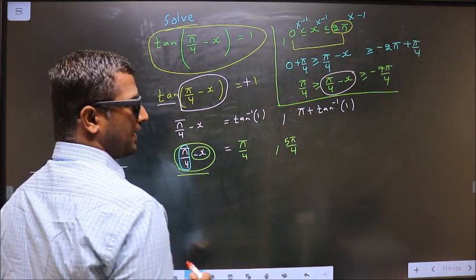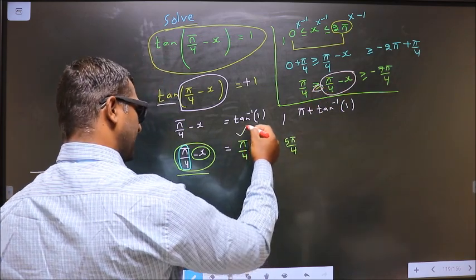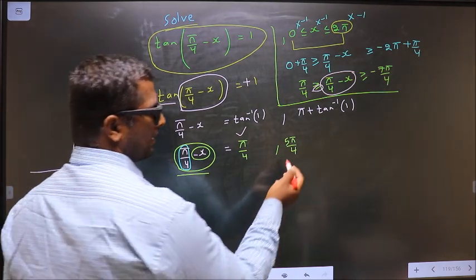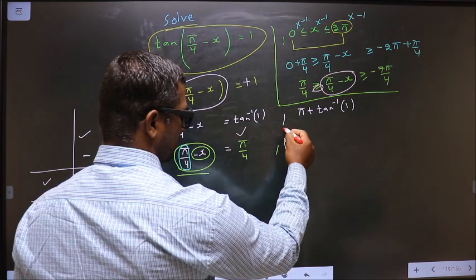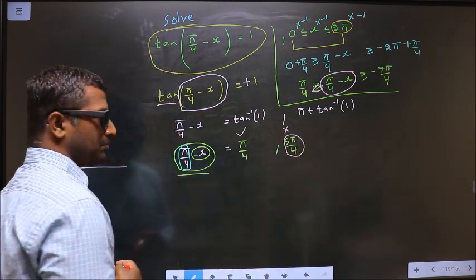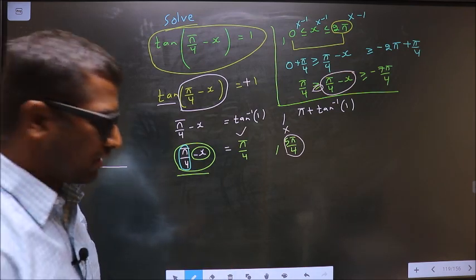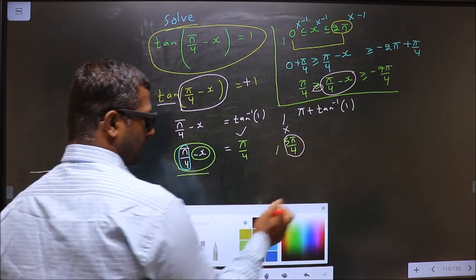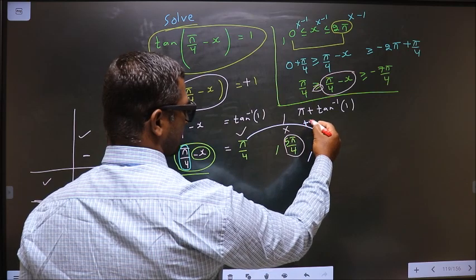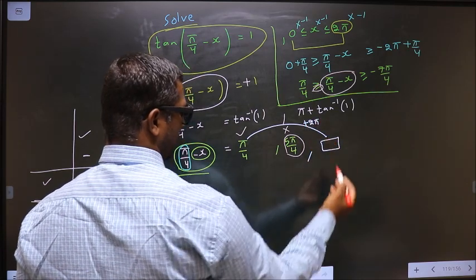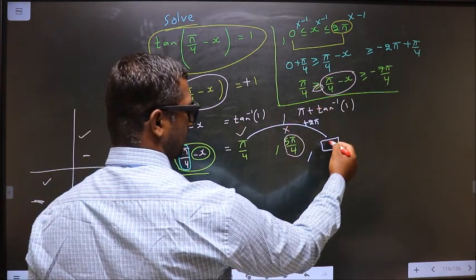Now check whether the values lie in the interval [-7π/4, π/4]. Does π/4 lie in that interval? Since we have 'equal to', yes — it is accepted. Does 5π/4 lie in that interval? No — so reject it. To check for another angle, add 2π to the rejected value: 5π/4 + 2π = 9π/4, which does not lie in the interval either, so reject it.